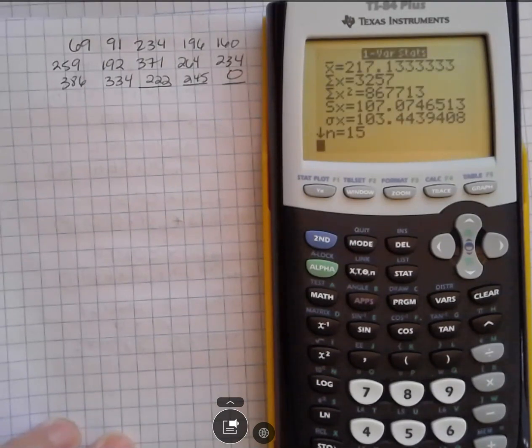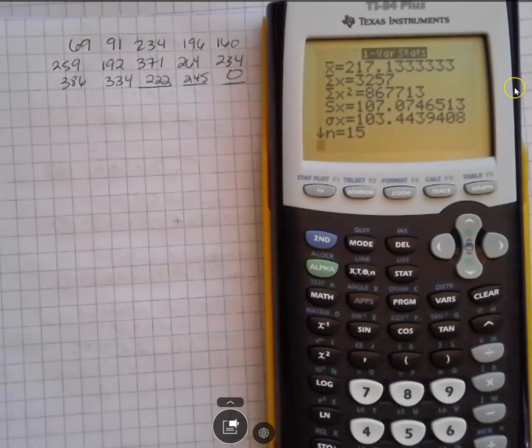And it's going to give me these values. And this is what I had on my document showing you what each of those means. So we have x bar, which is our mean. We have the sum of all the values. If I took the square of each value and then added that all up, this would give me this number. This is the standard deviation for a sample. This is a standard deviation for the population. This tells you the number of values that were in your list. So if you know you had 20 values and you got to here and it said 19, good thing you missed one. Go back and put it in, right? So that's kind of a nice thing to know.